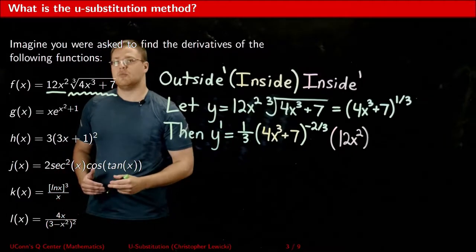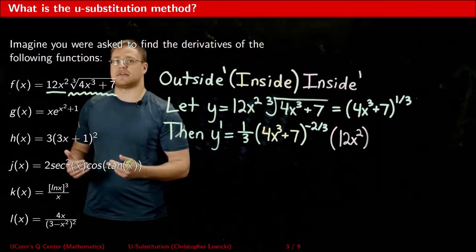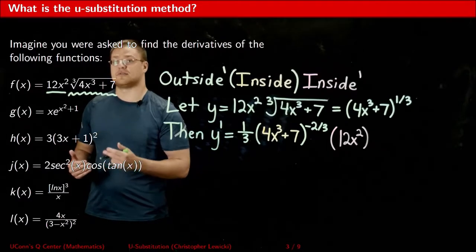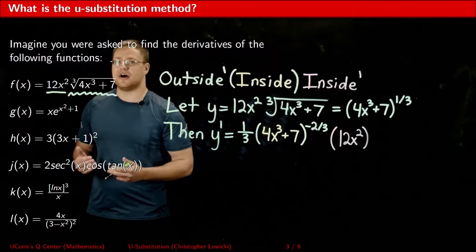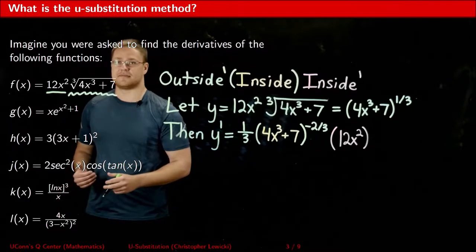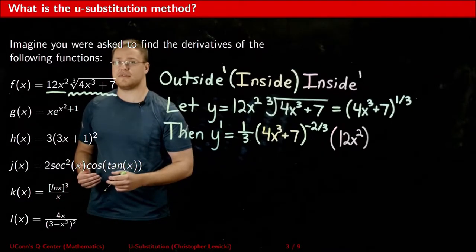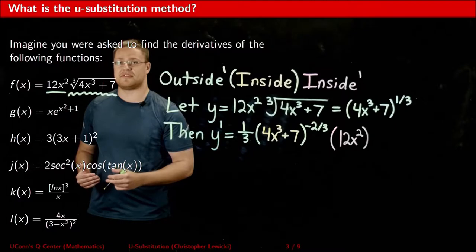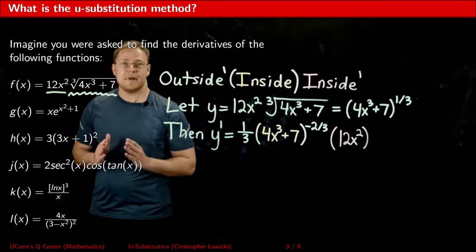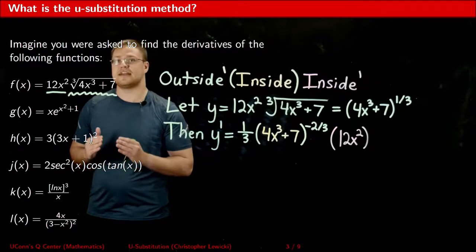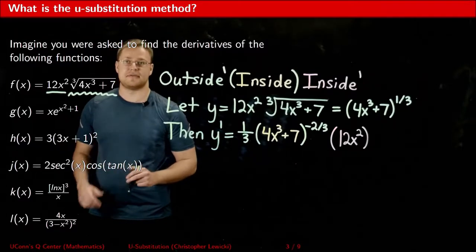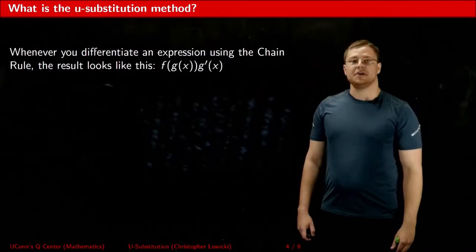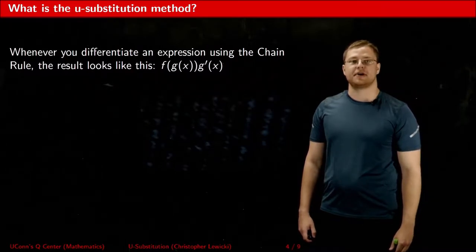What if we wanted to go the other way around and find the antiderivative of each of these functions? At first glance that sounds scary because these are all pretty complicated looking functions. But thankfully we have the u-substitution method to come to the rescue, because basically what it does is it simplifies each of the functions so that you could easily take their antiderivatives directly. Before I show you how to use it, let me explain where it comes from.